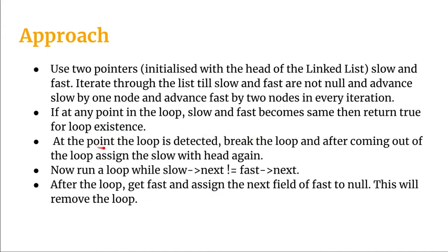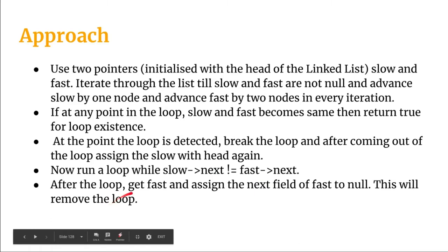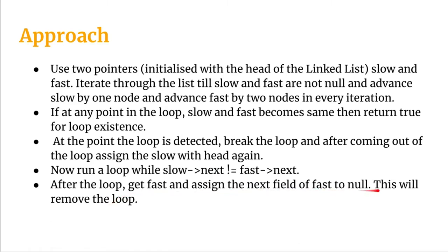Once the loop is detected, we break out of the detection loop and begin the process to remove it. We reassign slow back to head. Then we run a while loop with the condition: while slow.next is not equal to fast.next, we advance both slow and fast by one node each. After exiting this loop, we set fast.next to null, which removes the loop.